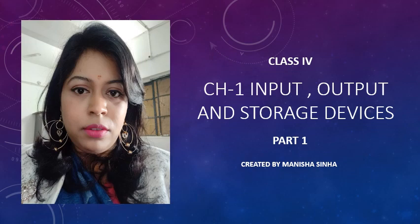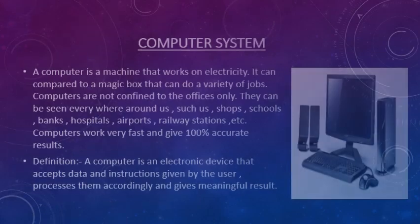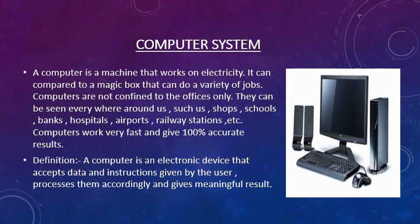Today we will discuss a few topics. First is the computer system. A computer is a machine that works on electricity. It can be compared to a magic box that can do a variety of jobs. Computers are not confined to offices only — they can be seen everywhere around us, such as shops, schools, banks, hospitals,